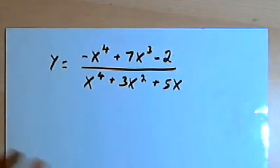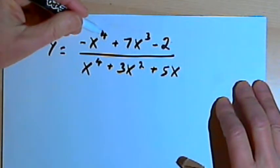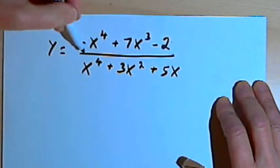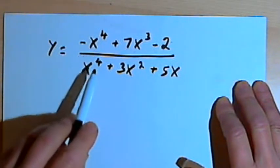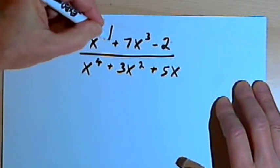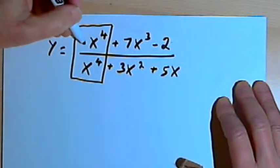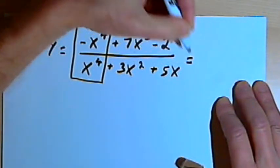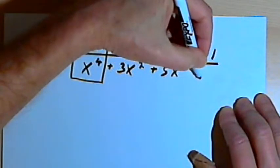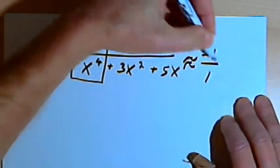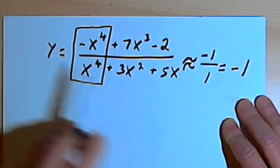In each of those examples we had a horizontal asymptote of y equals zero. Now let's look at some examples for the other situation — where we're dealing with the ratio of the coefficients. Here I've got y equals negative x to the fourth plus 7x to the third minus 2 over x to the fourth plus 3x squared plus 5x. Both of these are fourth-degree polynomials. Looking at the x to the fourth term in each: the lead coefficient in the numerator is negative 1, and in the denominator it's 1. That gives us a horizontal asymptote at y equals negative 1.